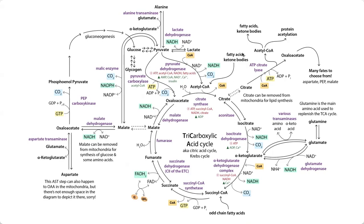Pyruvate has a lot more things we can do with it than we could do with fatty acids. Pyruvate can undergo anaplerotic reactions and go more directions than acetyl-CoA — it has three carbons and can be interconverted in various ways, whereas acetyl-CoA just has those two carbon units. So it makes sense to keep things in these bigger pieces we can do more with before committing to going down the fate of acetyl-CoA.